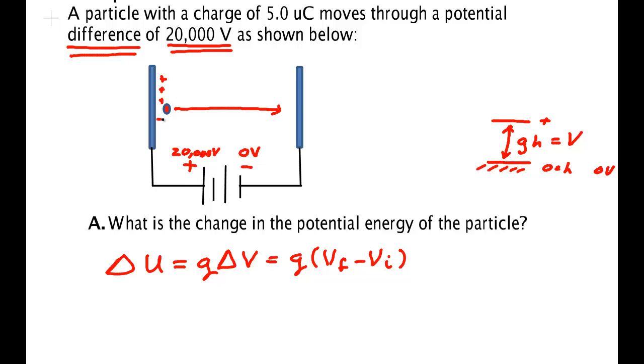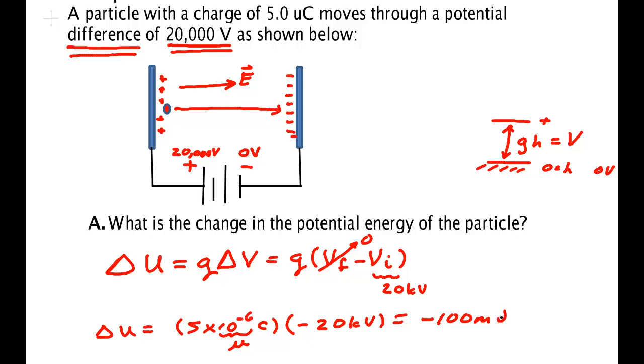Attracted by negative charges over here. Experience this force due to the electric field here. This is zero. This is 20 kilovolts. So delta U is 5 by 10 to the minus 6 coulombs times a minus 20 kilovolts. Notice you don't need to even convert this. You can leave that as a micro. A micro times a K is a milli. So this is minus 100 millijoules or minus 0.1 joule.